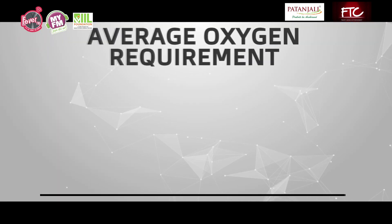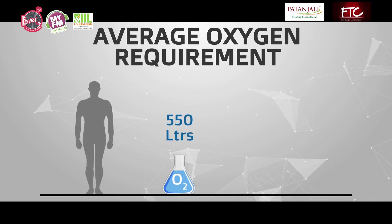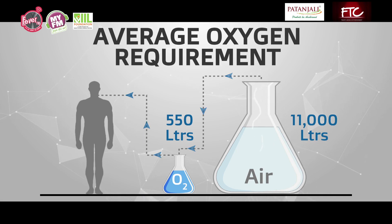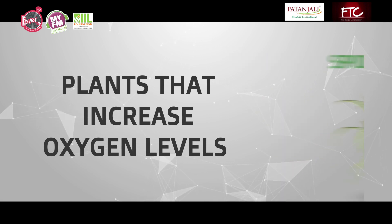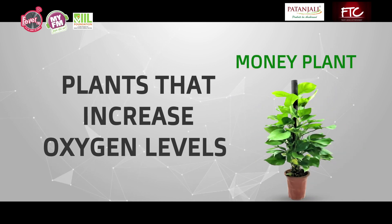We breathe about 11,000 liters of air daily, of which less than 20 liters is oxygen. This is an easy way for you to use plants. There are simple plants such as the snake plant or the spider plant or the money plant.